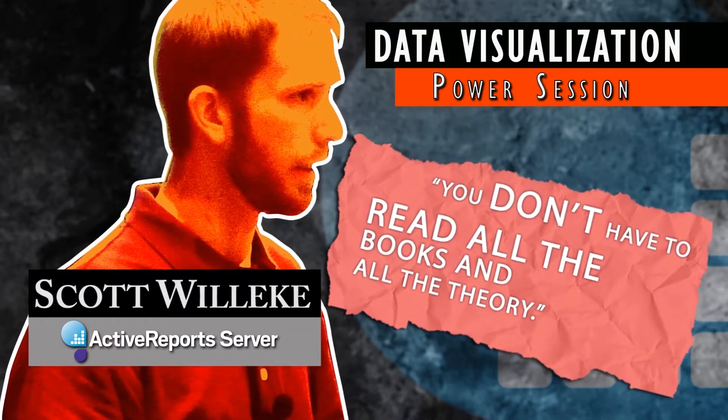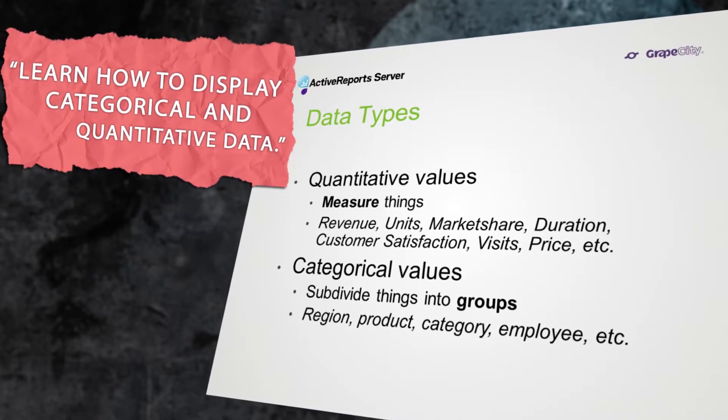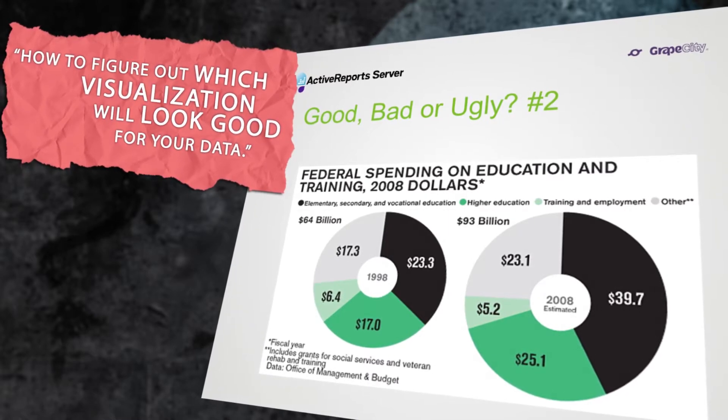You don't have to read all the books or go into all the theories. Break your data down into two different things: quantitative values measure things — if you see numeric values measuring something in your data, those are quantitative values. Identify what those are and make a mental note when thinking about how to visualize your data. What are my quantitative values? What are my categorical values? When you think of your data that way, it will help you put it into a chart in a much, much better way.